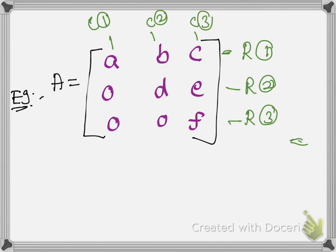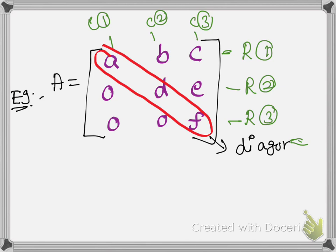So consider here the leading diagonal. This is the leading diagonal. Next, the values below the leading diagonal. These are the values below the leading diagonal, so here all elements are 0.